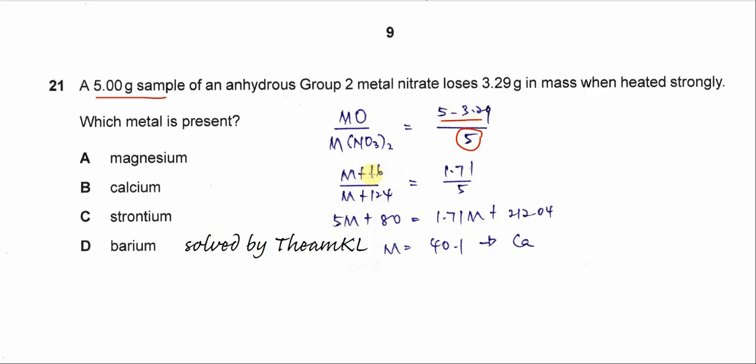Now the calculation should be like this. M we still don't know, plus the mass of oxygen. M plus the mass of the nitrate times 2, so it's 124, equal to 1.71 over 5.